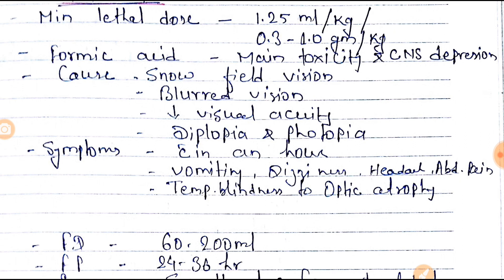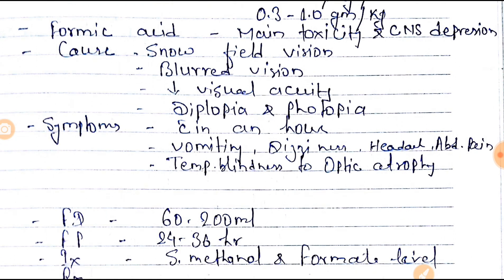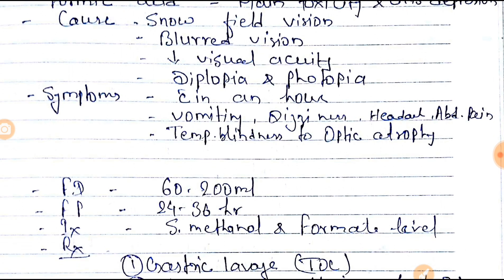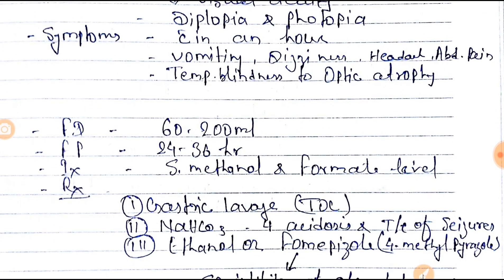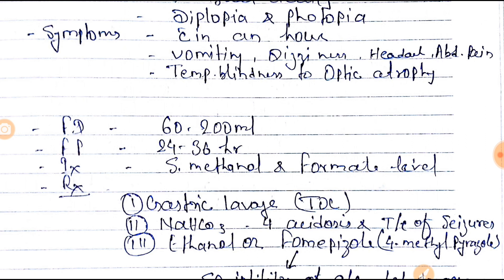Symptoms appear within an hour and include vomiting, dizziness, headache, abdominal pain, and temporary blindness progressing to optic atrophy. The fatal dose is 60 to 200 ml, and the fatal period is 24 to 36 hours.